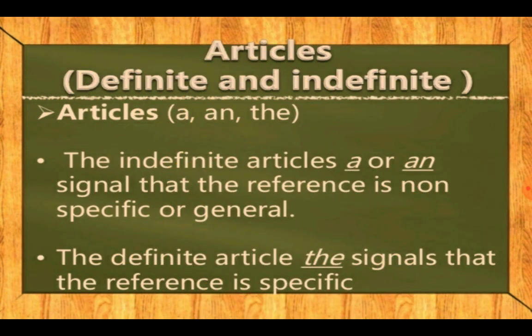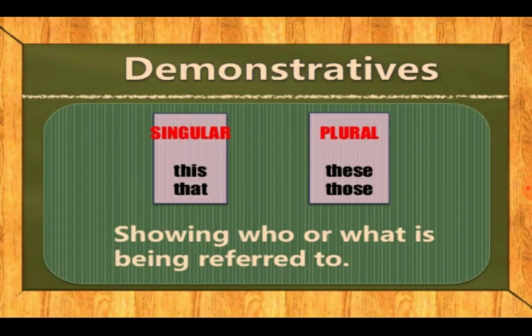First, we are all familiar with articles — words we use in our daily life. The indefinite article 'a' or 'an' is used when the reference is non-specific or general. When talking about a simple, general noun, we use 'a' or 'an'. But when talking about a specific or particular noun in singular form, we use the definite article 'the' — for example, the Taj Mahal, the Gita.